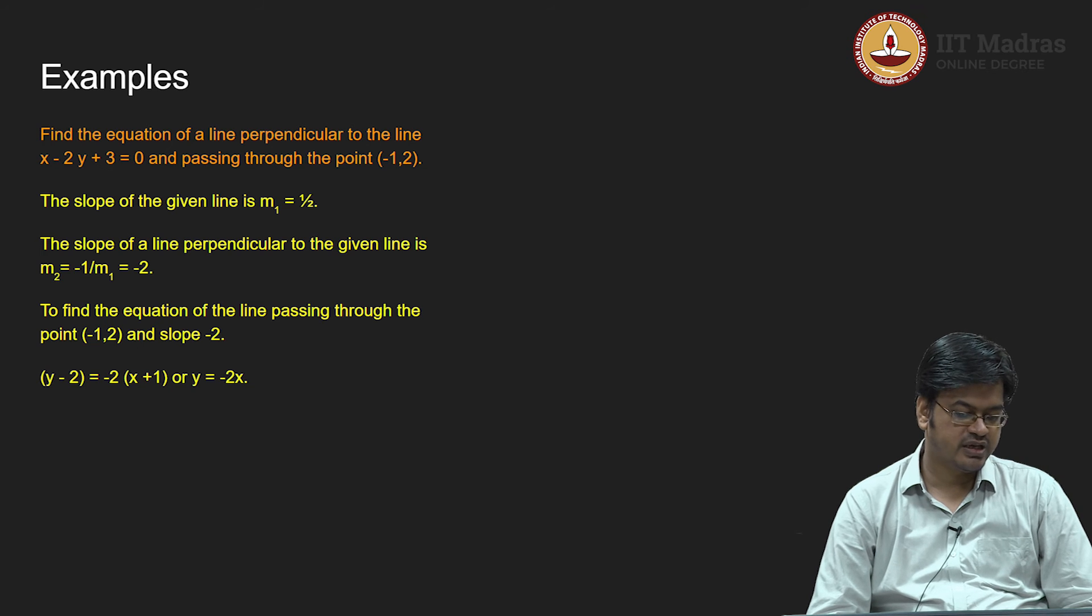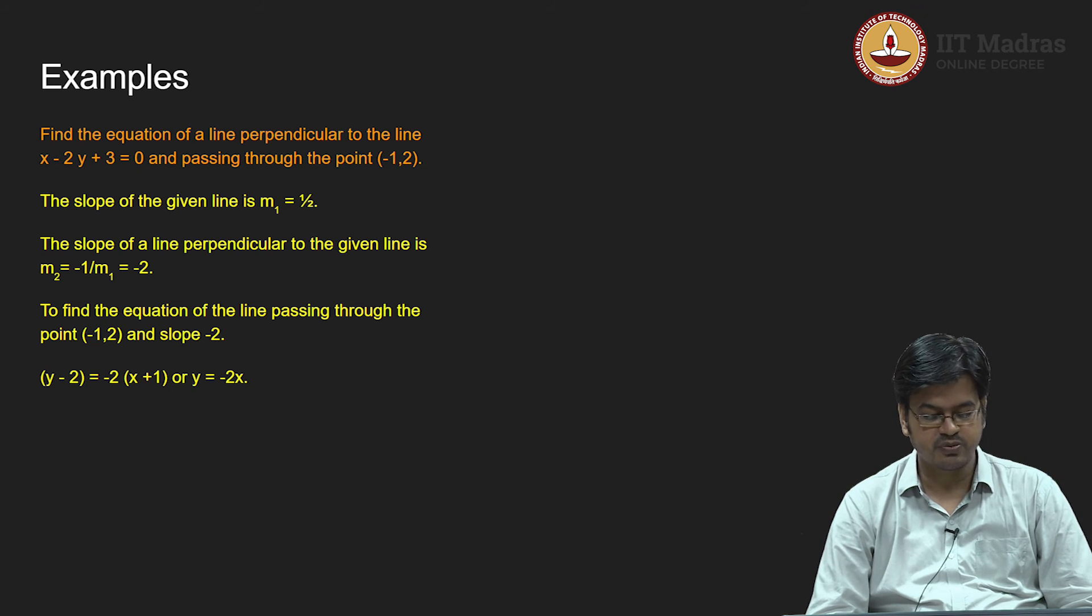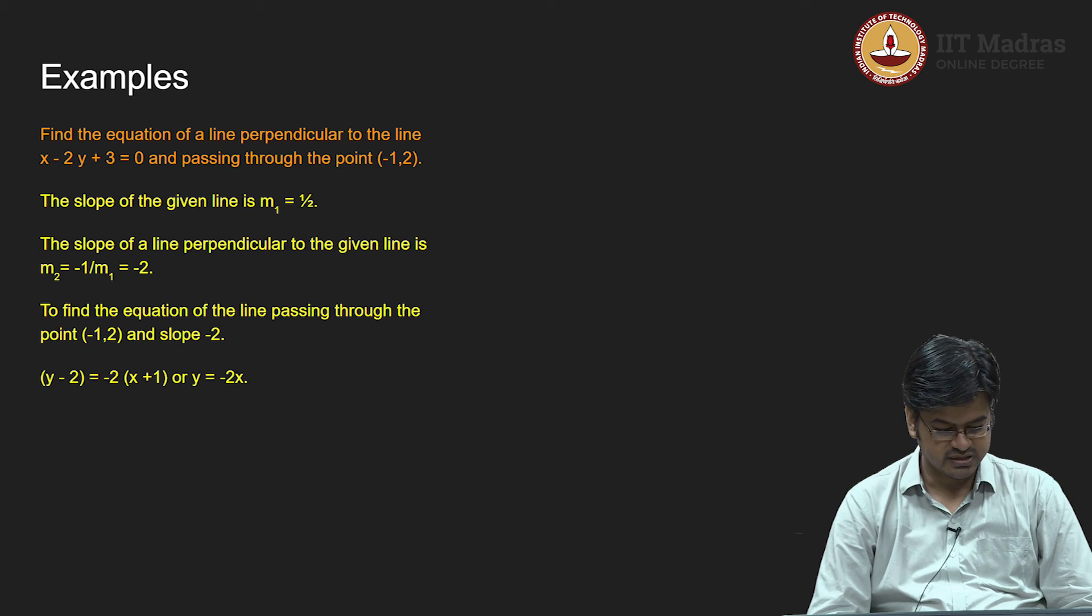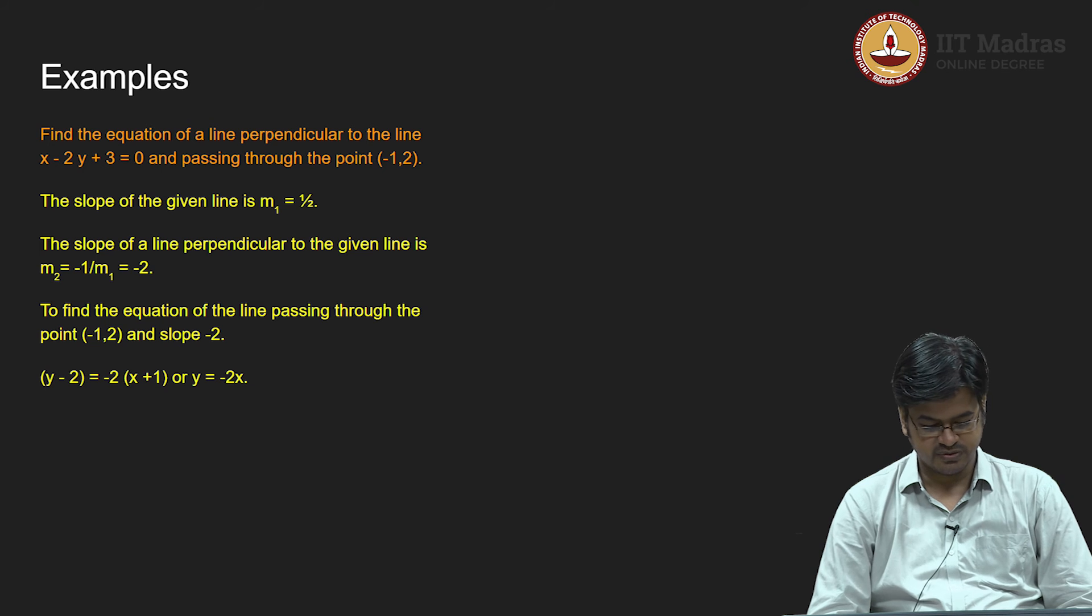This 2 will get cancelled as a constant. Therefore, I will get the equation of a line to be y equals minus 2x, or in general form you can write this as minus 2x plus y equals 0.